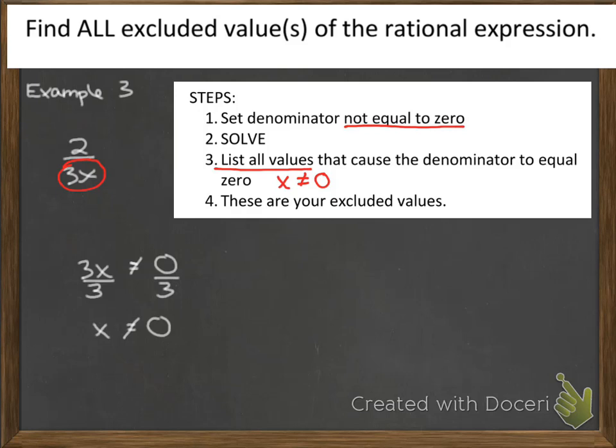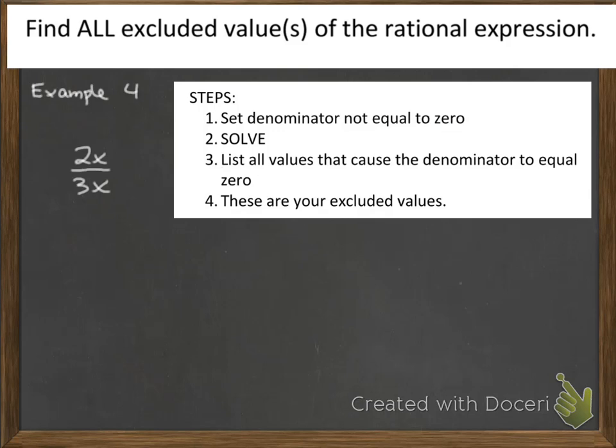Let's do a few more examples. Here we have 2x divided by 3x. Now at this point, you might be wondering, well, what about the numerator? What about the guy upstairs? And in this particular application, when we're just trying to find restricted values, we're not going to worry about what's upstairs.